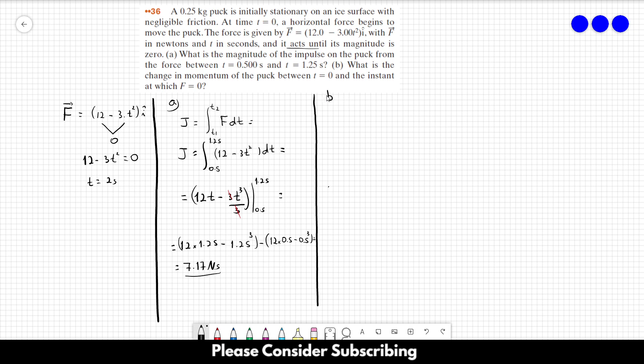For letter b, we want the change in momentum. However, we know that the impulse is equal to the change in momentum. So we can get the change in momentum by just calculating the impulse. We're going to do exactly the same thing as letter a, but this time it's from 0 to 2 seconds. That's the only difference.